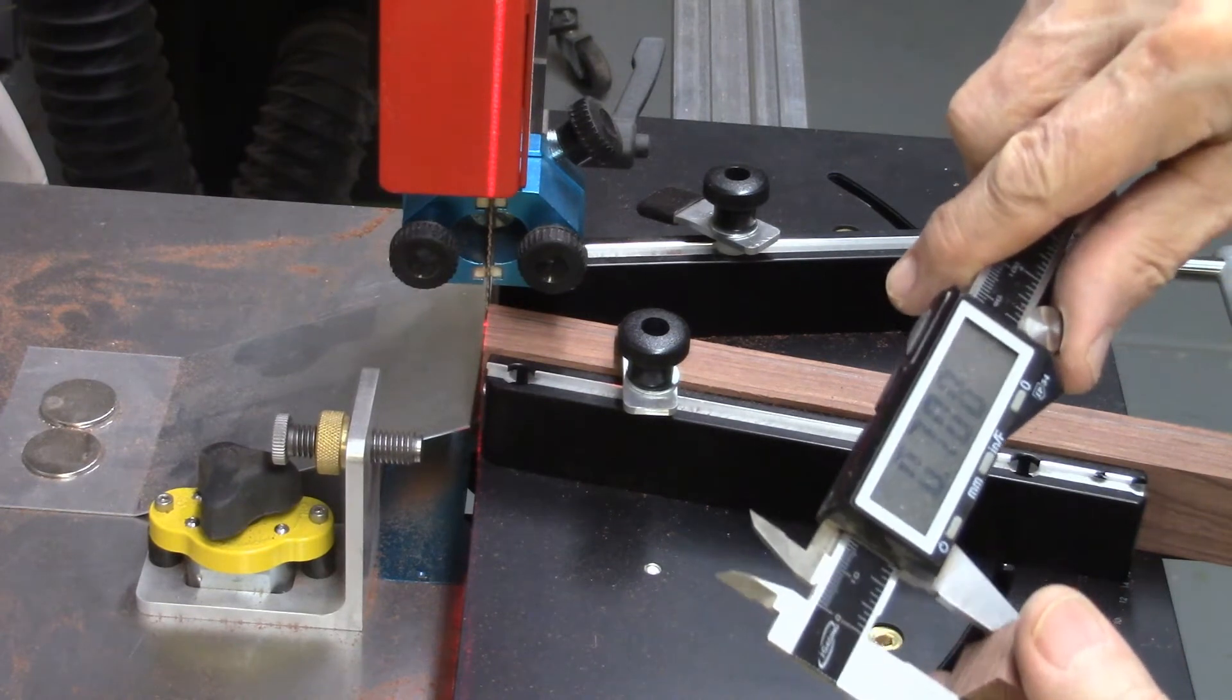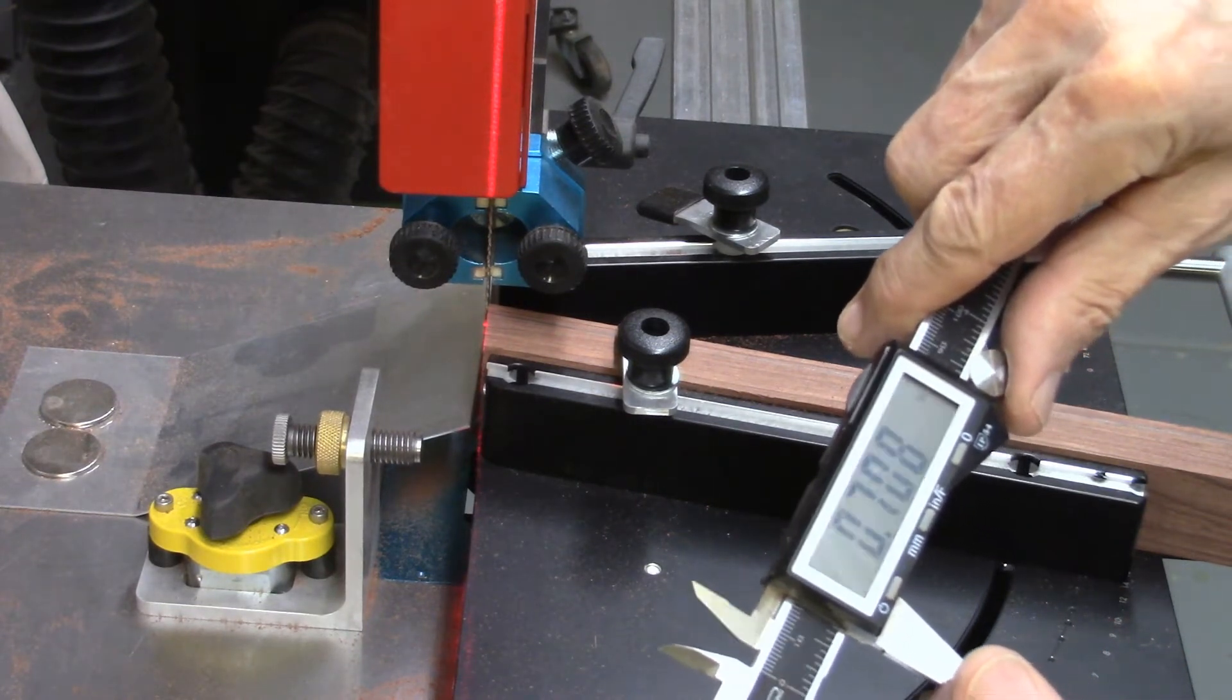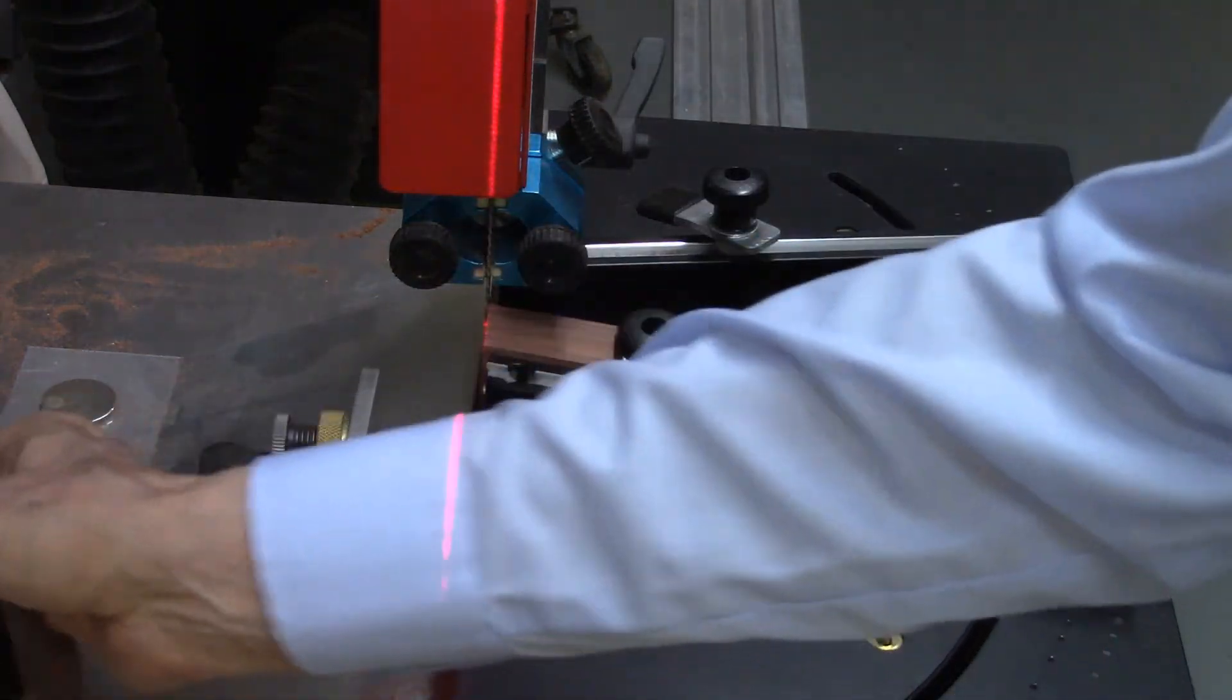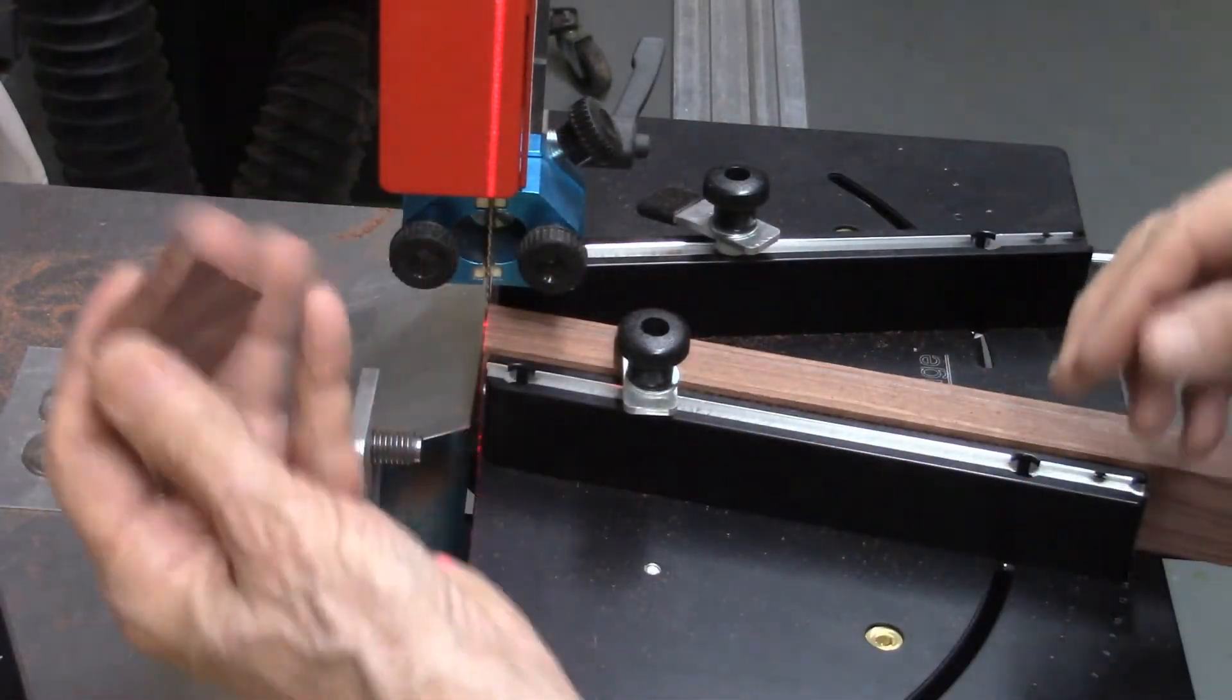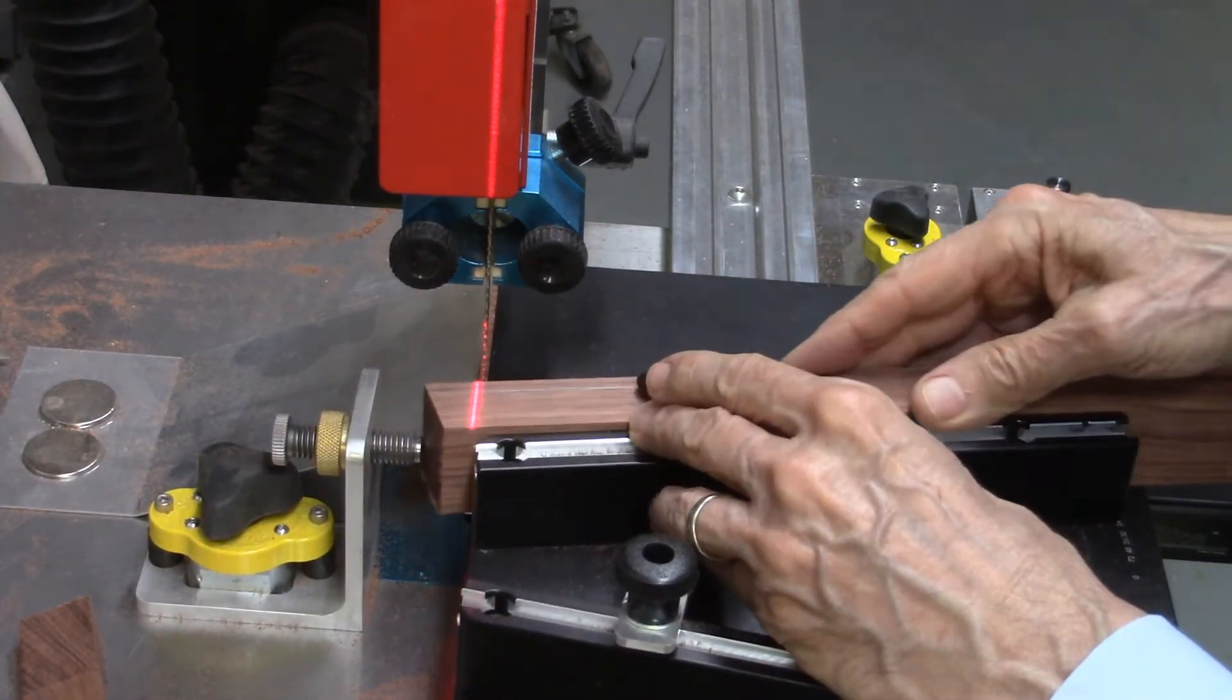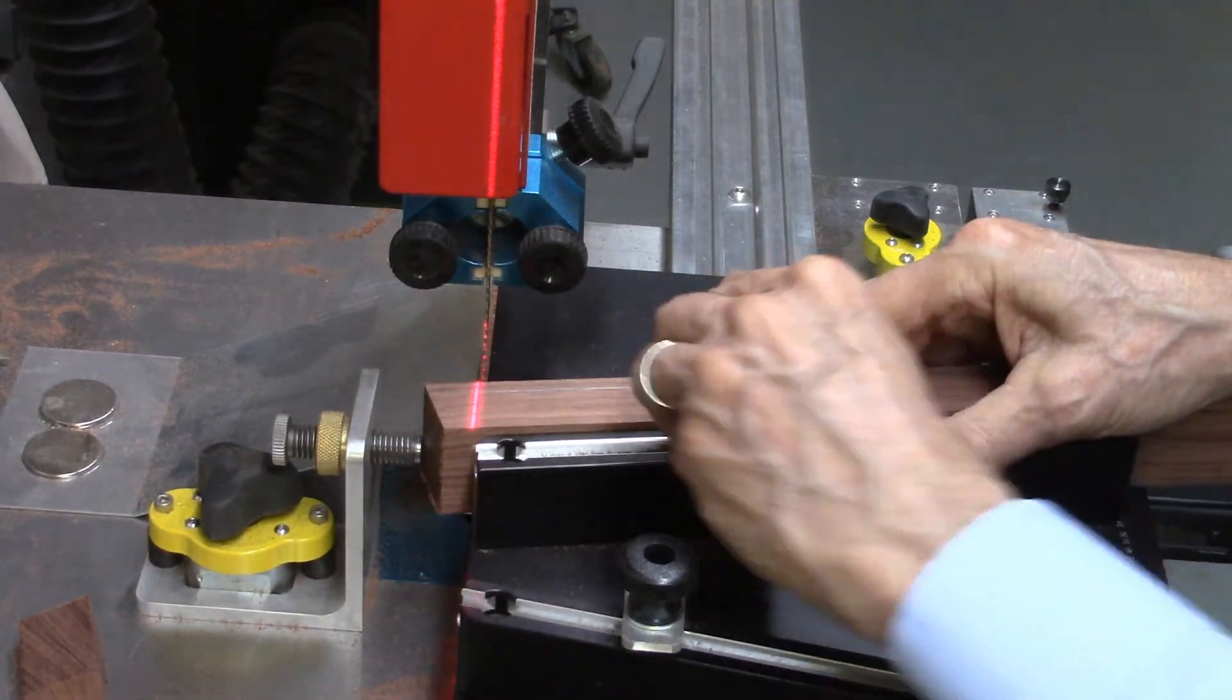And it's 0.708, pretty close to 0.71. It shows you the advantage in the system. You can actually measure where your blade's going to cut. So I'll just continue cutting additional pieces until I have my ring completed.